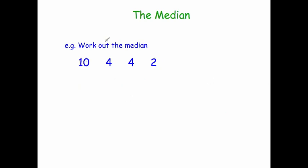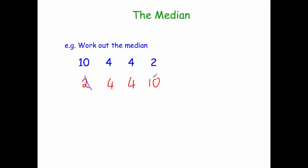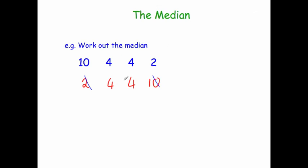Finally, we've been asked to work out the median of 10, 4, 4 and 2. Let's arrange them: 2, 4, 4 and 10. Let's cross off and find the middle one — 2 and 10. This time again we've got two numbers in the middle because we started with an even number of numbers. Because it's 4 and 4, the middle of 4 and 4 is 4. So the median is 4.